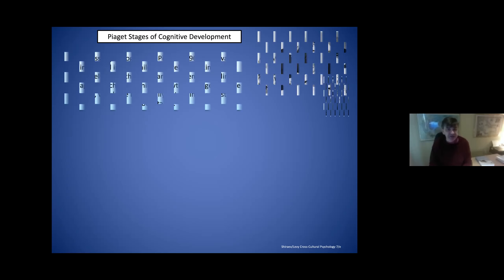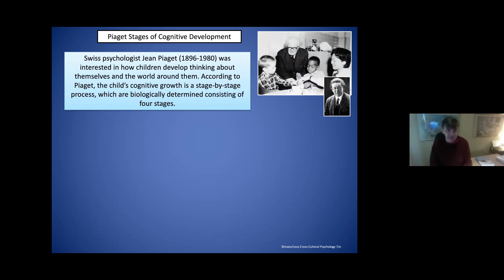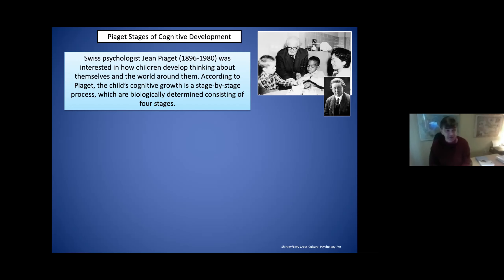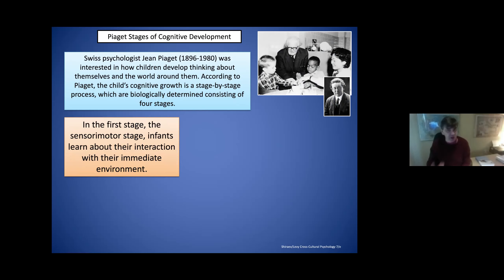Jean Piaget is a professor whose name appears in every psychology textbook. His research, conducted in the 20th century, found significant support across Latin America, Africa, Asia, and Europe — his studies are quite cross-cultural in significance and replicability. He suggested that children develop their cognitive skills in stages, and it's not our will or desire to move forward from stages — this is how nature unfolds. Jean Piaget himself was a biologist by training.